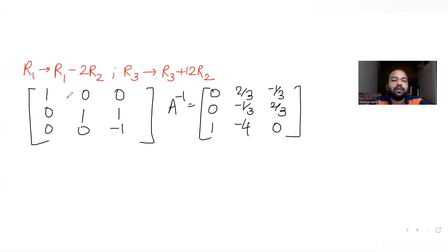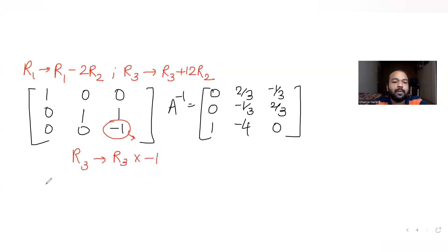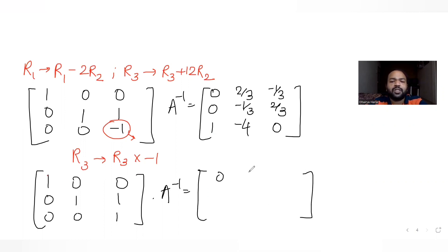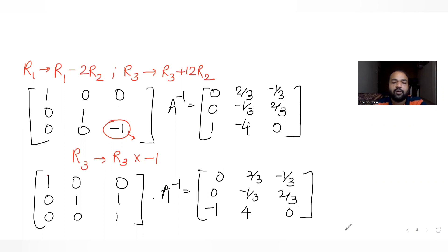Once the second column is handled, we work on the third column's last element. The element is -1, so to make it 1 I apply R3 changes to R3 times (-1). Multiplying row 3 by -1 makes that diagonal element become 1. First and second rows remain the same.